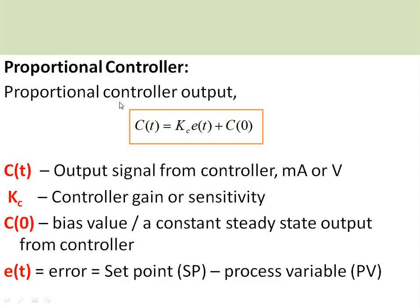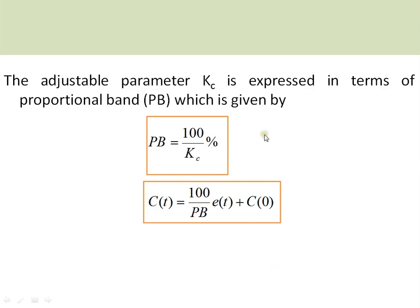The first part of PID is the proportional controller. The proportional controller output is given by: c(t) = Kc × e(t) + c(0), where Kc is the proportional gain, which is a tunable parameter, and c(0) is the bias value — the output when error equals zero. The error is the difference between the set point and the measured process variable. The controller gain is often expressed in terms of proportional band: Pb = 100 / Kc.